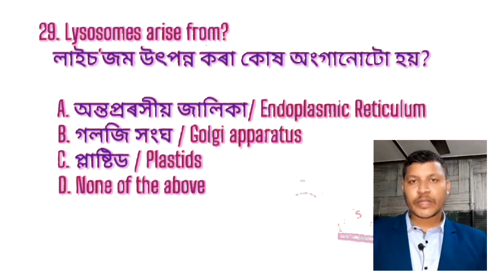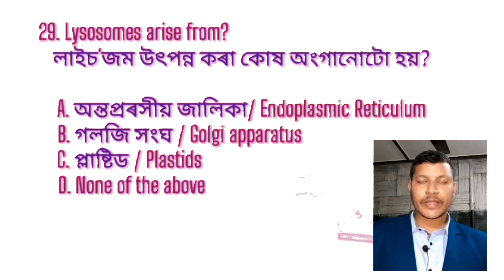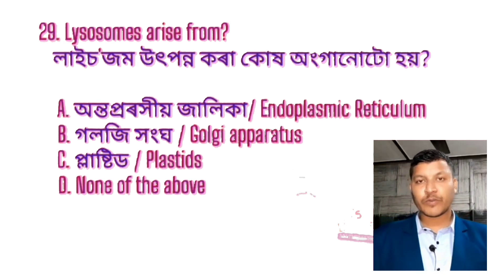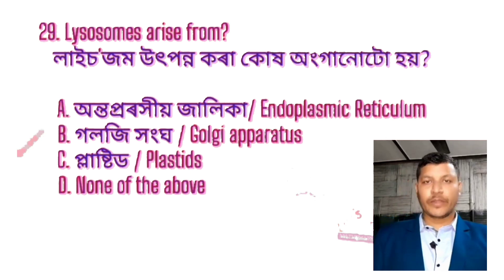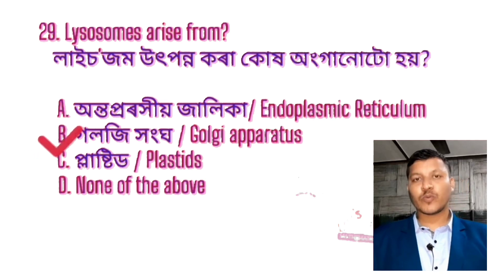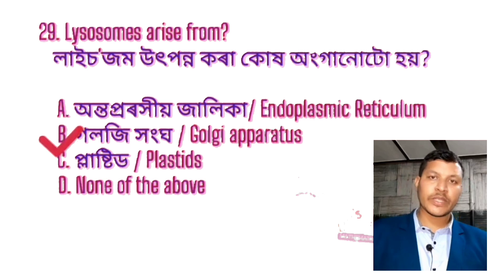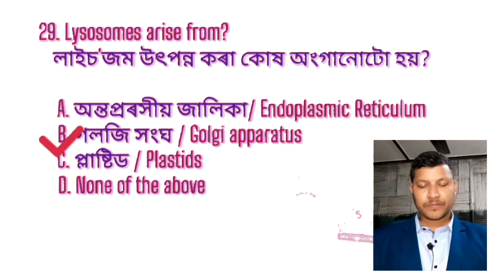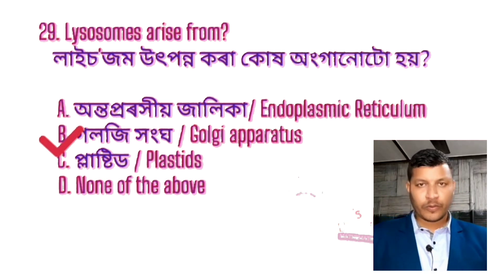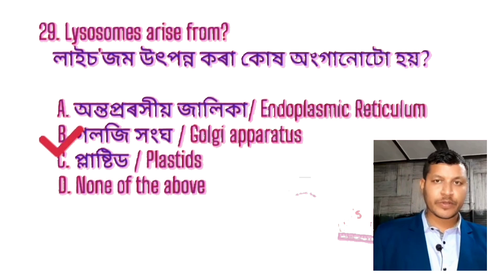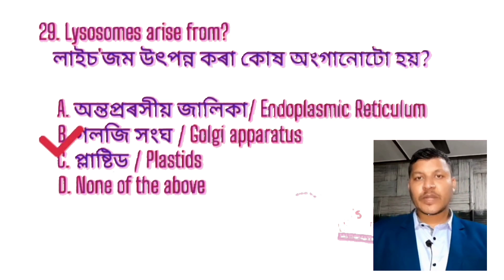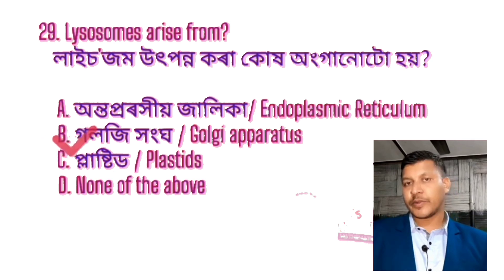Question number 29: Lysosomes arise from which organelle? Options: endoplasmic reticulum, Golgi body, plastid. The answer is option B — Golgi body. Lysosomes arise from the Golgi body.